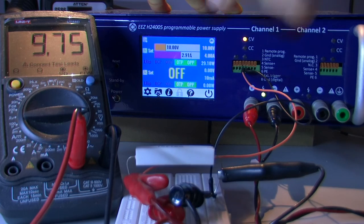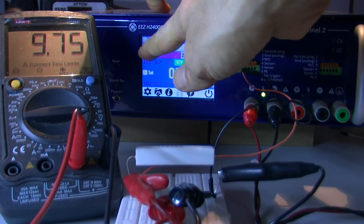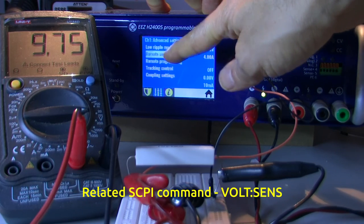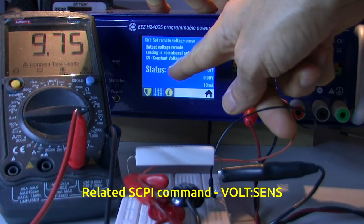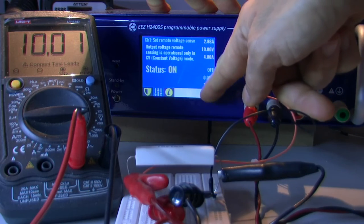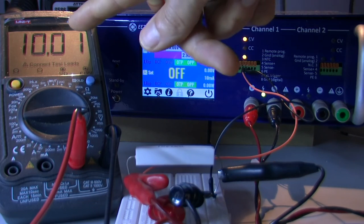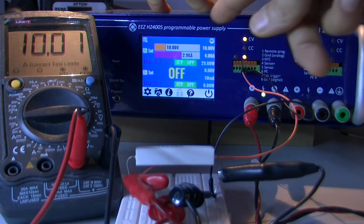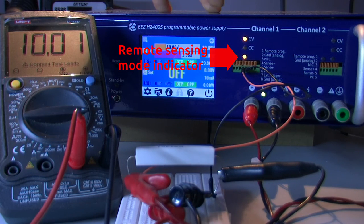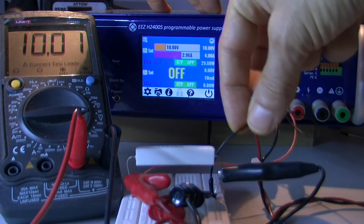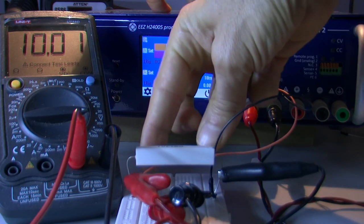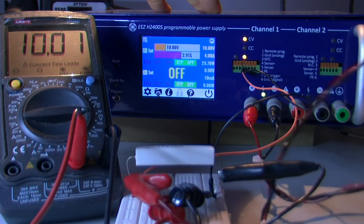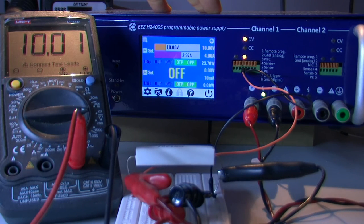We still cannot see any difference because remote sensing is not activated. Status is off. And now here we go. We have 10 volts like what is set because voltage is now measured directly on the load terminal, and all cable loss and connection loss is now compensated.